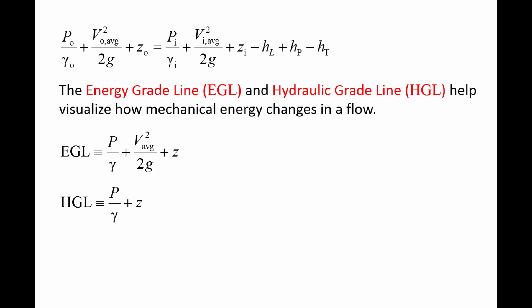HGL is just the pressure head plus the elevation head and will represent the total potential energy in the flow. EGL minus HGL gives the velocity head, the term representing the total kinetic energy in a flow.